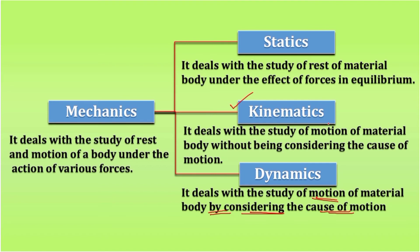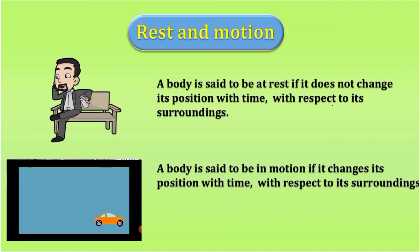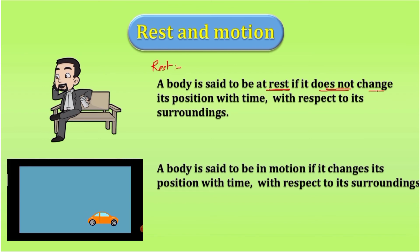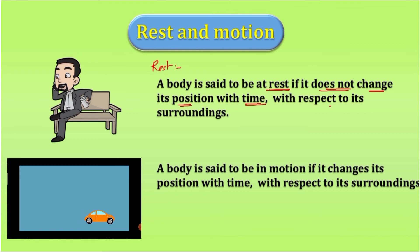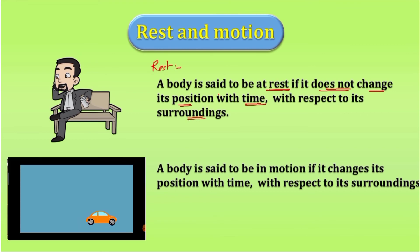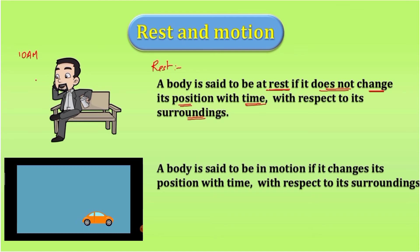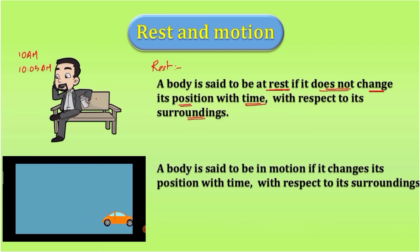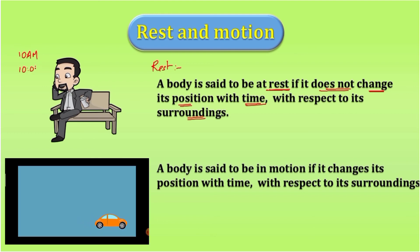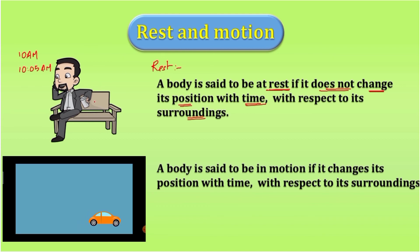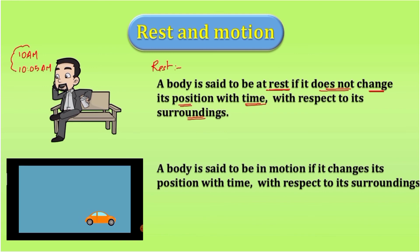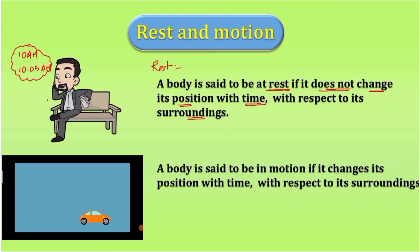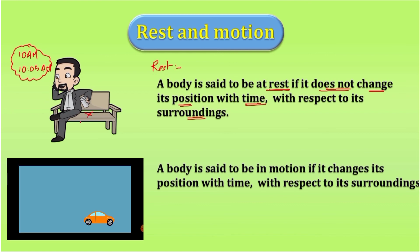Now we can explain two important terms in the chapter: rest and motion. A body is at rest if it does not change its position with time and also with its surroundings. For example, a person sitting on a bench — observing from 10 AM to 10:05 AM, his position is not changing with respect to time and also with respect to his surroundings, meaning the bench on which he is sitting.